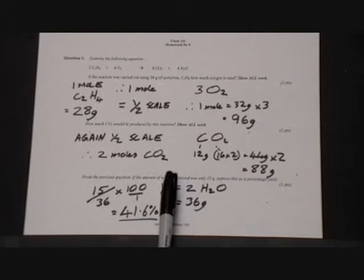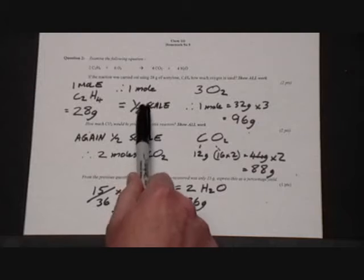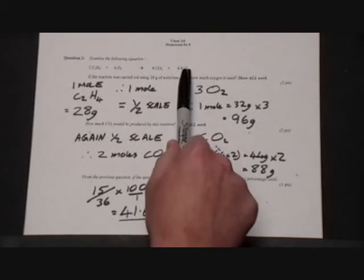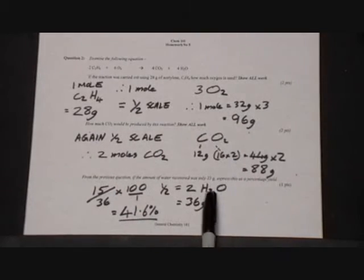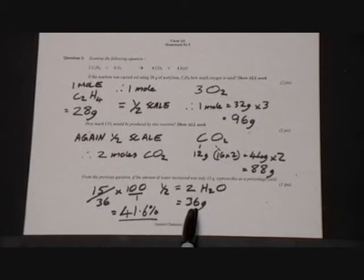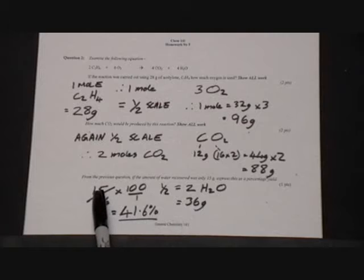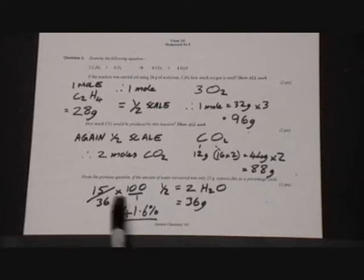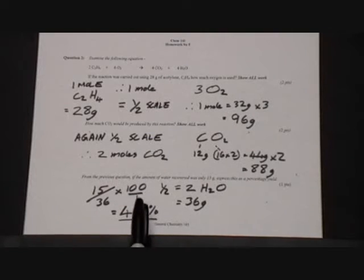For the percentage of water, on this half scaling, again remember, so of four moles in the original equation we should be working with two moles, which is 36 grams. So the actual recovered yield, 15 grams, divided by the theoretical mass, 36, times 100, gives us 41.6% recovery. And that's the answer to our third question in question two.